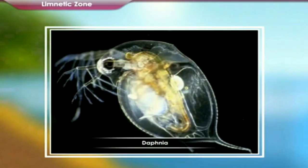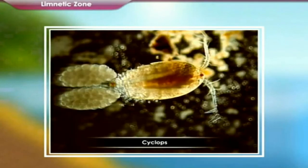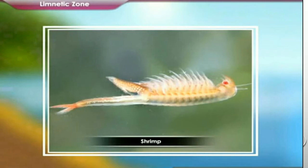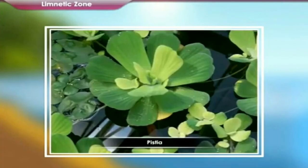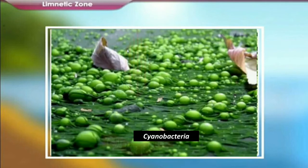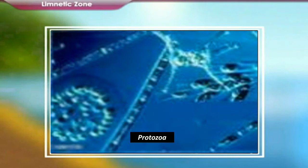Other organisms include transparent or whitish-bodied crustaceans such as Daphnia, Cyclops, shrimps, and copepods, etc. The floating plants include Hyacinth, Wolffia, and Pistia. The phytoplankton include different kinds of algae with cyanobacteria — very important — blue-green algae in this zone, plus protozoa like dinoflagellates, Volvox, Euglena, etc., found in this zone.